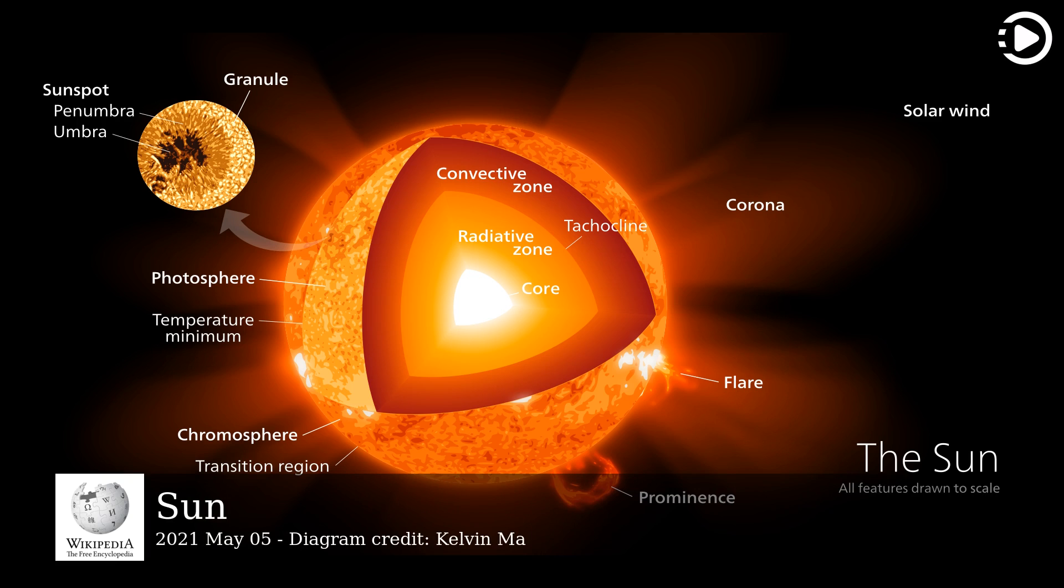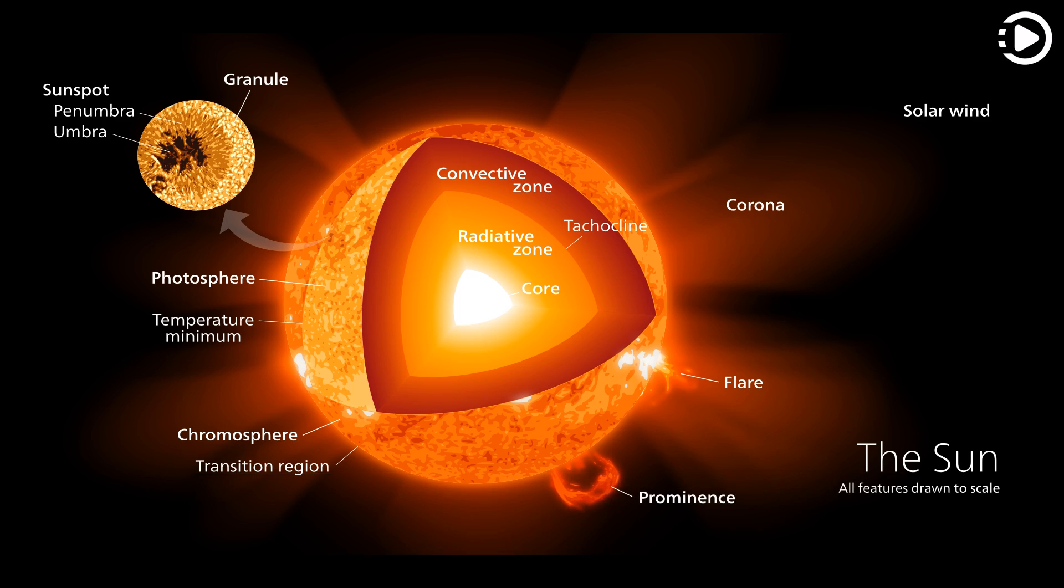The Sun is the star at the center of the solar system. It is a nearly perfect sphere of hot plasma, heated to incandescence by nuclear fusion reactions in its core, radiating the energy mainly as visible light and infrared radiation.